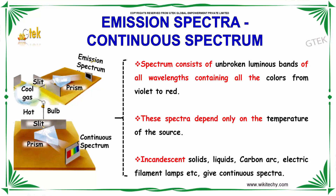You are able to see the emission spectrum via the cool gas, via the slit — it's passed and you get emission. Over here, you have your hot bulb, slit, and directly to the prism, you get your continuous spectrum.